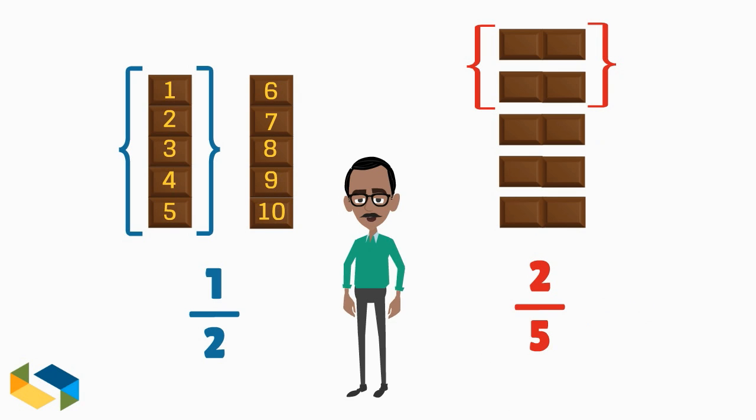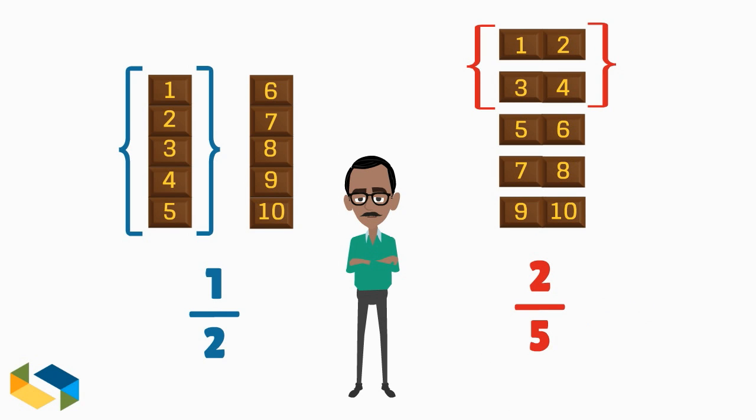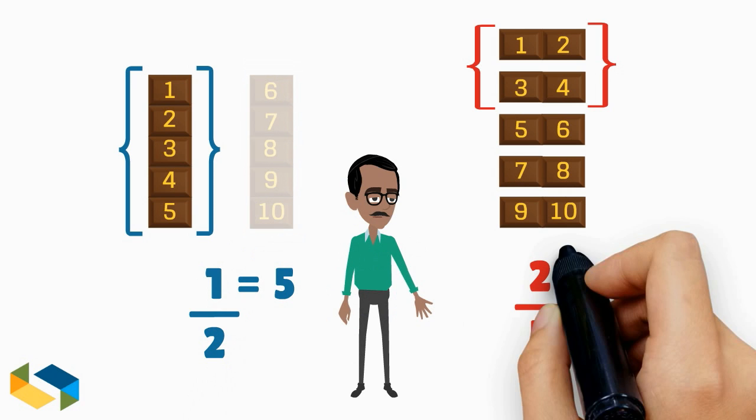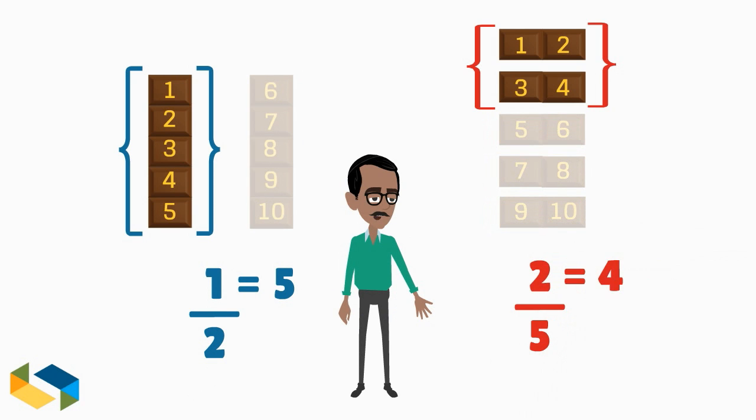As you observe, both these bars have 10 small chocolate pieces each. So, this one part here is in fact five pieces of chocolate and these two parts here have four pieces.